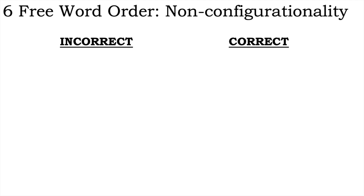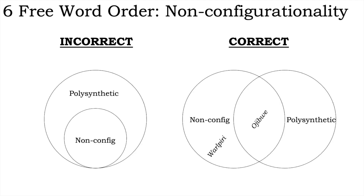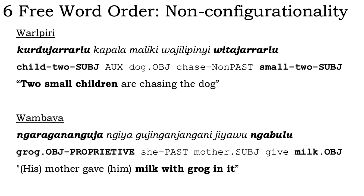One final note about non-configurationality, or free word order languages: while many polysynthetic languages have these characteristics, many non-configurational or free word order languages are not polysynthetic. For instance, non-configurationality was first pointed out in Warlpiri, a non-polysynthetic Australian language, as in this example. And here's another example of a discontinuous phrase in a non-polysynthetic Australian language, Wambaya.